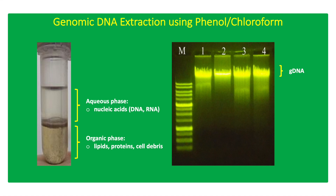After centrifugation, the aqueous phase containing the gDNA is transferred to a clean tube for precipitation using sodium acetate and ethanol. Precipitated gDNA is pelleted by centrifugation and eluted using Tris-EDTA (TE) buffer.